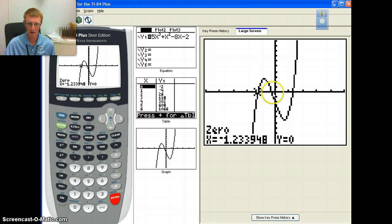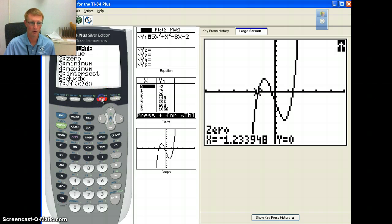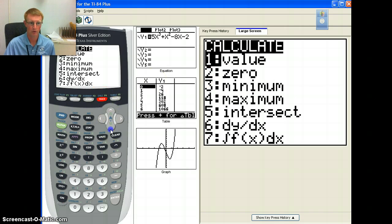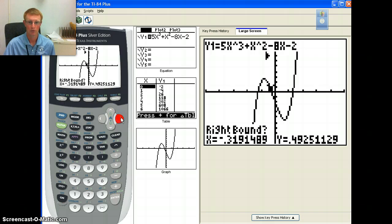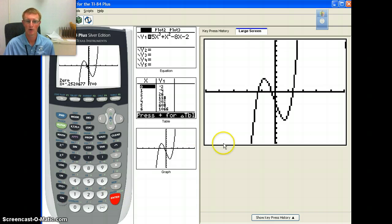And then if we wanted to find the next zero, we would do the same thing. I'll do one more. Second calc. Go down to zero. And I'm going to go over to our other zero. It wants a left bound. So notice this time, the values to the left of this zero are now above the x-axis. So I hit enter above. Then I go to my right bound, which is going to be below. Hit enter. And then my guess, I hit enter a third time. And it gives me my new zero, which is negative 0.2520677.